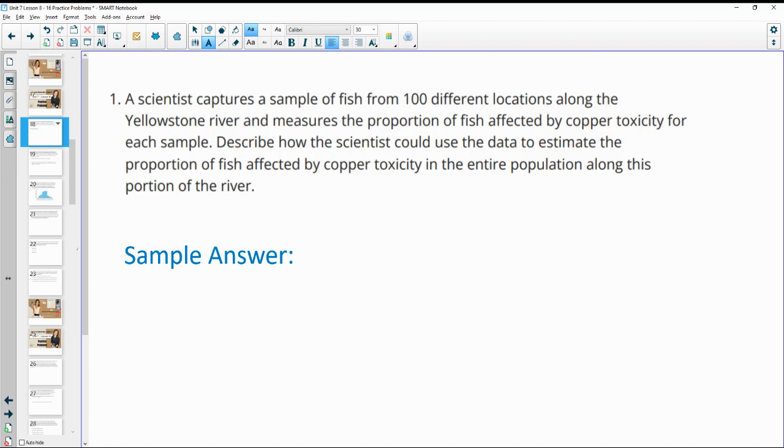Number one says that a scientist captures a sample of fish from 100 different locations along the Yellowstone River and measures the proportion of fish affected by copper toxicity for each sample. Describe how the scientist could use data to estimate the proportion of fish affected by copper toxicity in the entire population along the river.